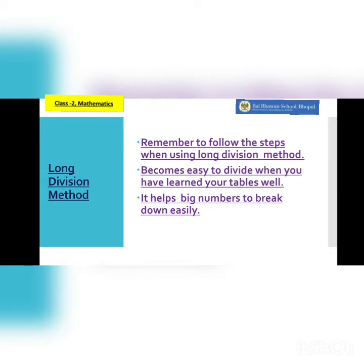It becomes easy to divide when you have learned your tables well, so learn your tables well children. It helps big numbers to break down easily, meaning when you are dividing big numbers, the division becomes very easy when you follow all the steps well. There are five steps involved. They seem to be quite lengthy, but when you start doing your division sums they won't be any problem.